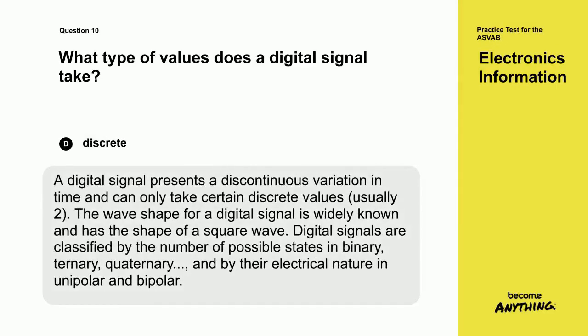A digital signal presents a discontinuous variation in time, and can only take certain discrete values, usually two. The wave shape for a digital signal is widely known, and has the shape of a square wave. Digital signals are classified by the number of possible states in binary, ternary, quaternary, and by their electrical nature in unipolar and bipolar.